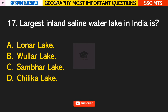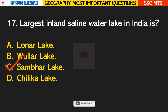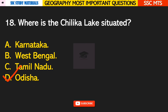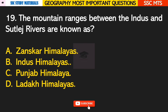Question number 17: the largest inland saline water lake in India is? Answer C — Sambar Lake. Question number 18: where is Chilika Lake situated? Answer D — Chilika Lake is situated in Orissa.